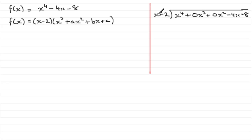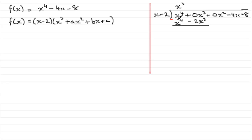First of all, what do we multiply x by to get x to the 4? That's got to be x cubed, and we put that up there. Multiply x cubed by x minus 2: x cubed times x is x to the power 4, and x cubed times minus 2 is minus 2x cubed. We subtract to find the remainder. x to the 4 minus x to the 4 is 0, then no x cubed minus minus 2x cubed gives plus 2x cubed. Bring down the next value: plus 0 x squared.